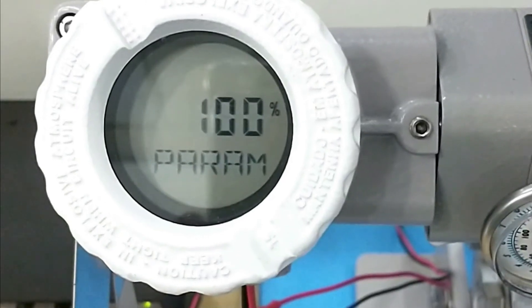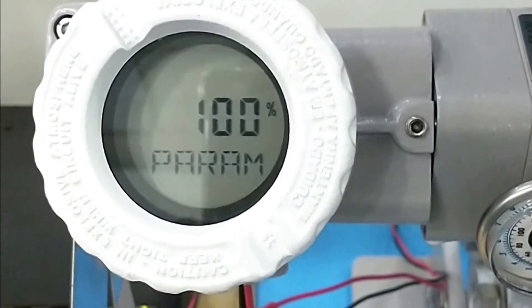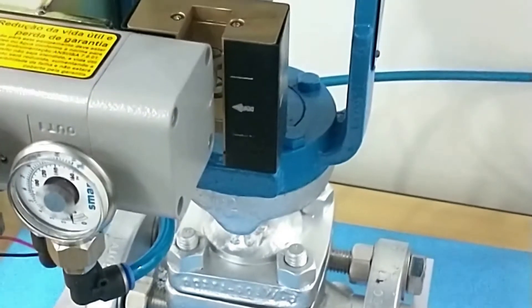Param saves the calculated parameters and returns the control at the end of the setup.